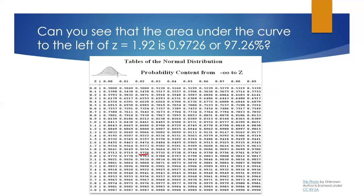The area under the curve to the left of z equal to 1.92 is 97.26%, or 0.9726. Go down to 1.9 and then go over to the column under 0.02, and right there the number underlined in red is the area to the left of the curve for z equal to 1.92.